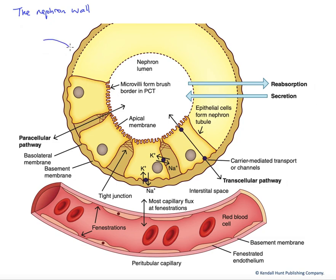At the top here, we have the nephron in cross-section. Here's the inside, the nephron lumen. This is the space through which our glomerular filtrate will be flowing and being modified through the processes of reabsorption and secretion.